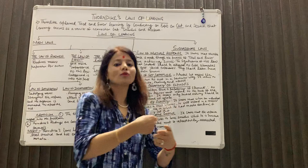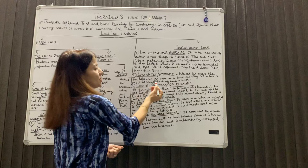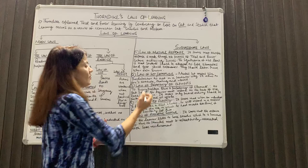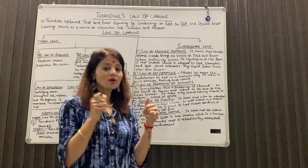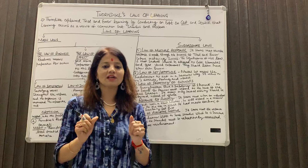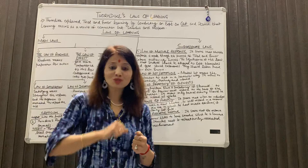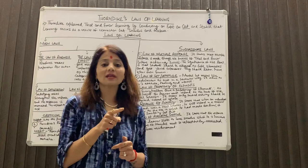अगला law है law of set or attitude. Mental set means the predisposition to act in a particular way — it refers to one's attitude, feeling, and interest. Law of set और attitude से इनका मतलब था कि किसी भी व्यक्ति का क्या attitude है, क्या feeling है, क्या interest है उस कार्य को सीखने में. उदाहरण के लिए, laws of learning पढ़ना net, services, graduation, class 11-12 के psychology या education के students के लिए beneficial है — लेकिन अगर medicine या science side के student को यह पढ़ने को कहें तो शायद उसको interest नहीं आएगा. Thorndike का यह मानना था कि हमारा interest और positive attitude depend करता है कि हम उस चीज़ को कितना अच्छे से सीख सकते हैं.